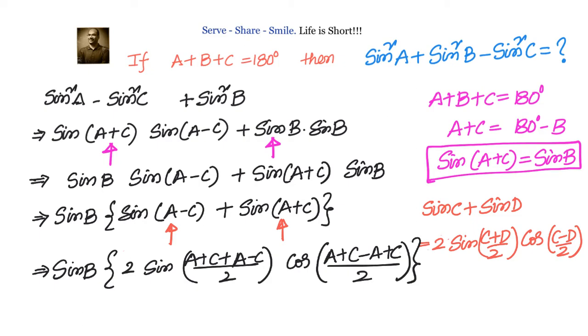Now we can go ahead and cancel inside the trigonometric ratios. The angles C and C will cancel, A and A will cancel. Simplifying that, we will have sinB·2sin(2A/2) which is A, so I can write 2sinA into cos(2C/2) which is C, so cosC.